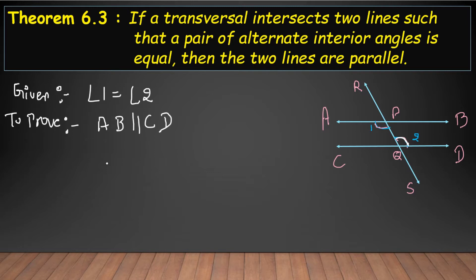Now for the proof. First, angle 1 equals angle 3. We will prove angle 1 equals angle 3 by vertically opposite angles. The reason is vertically opposite angles.